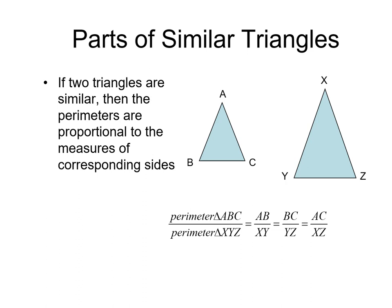Now, parts of similar triangles. We'll be talking about perimeter and area. Perimeter is the sum of all sides, or as I always tell you, it's the distance around the figure.